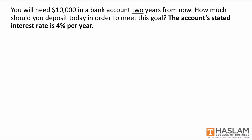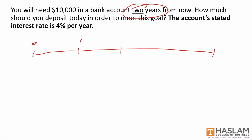Now suppose we tweak the previous example such that we're going to receive the $10,000 two years from now instead of four years from now. How do we proceed? We still draw a timeline, but the $10,000 just shows up at a different, earlier point. We're going to discount, but here we only discount the $10,000 two periods instead of four. Is the answer going to be larger or smaller than before? It's going to be larger — the future cash flow is the same, but you're receiving it sooner, so it's worth more to you today.